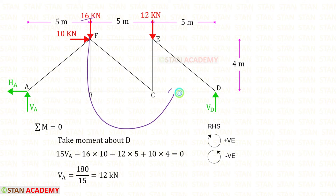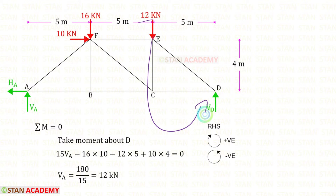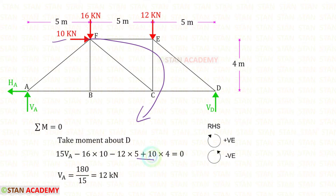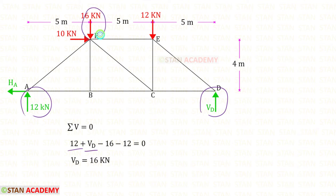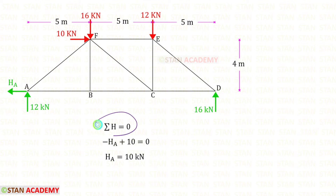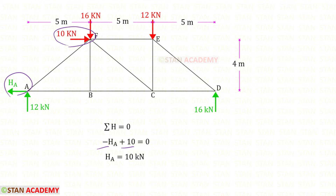This load is acting in the anticlockwise direction, so it will be negative and the distance is 10. This load is also acting in the anticlockwise direction, so it is also negative and the distance is 5. This horizontal load is acting in the clockwise direction, so it will be positive and the distance is 4. For VA, we will get 12 kN. Using this rule, we can find VD. VA and VD are acting upwards, so both are positive. These two loads are acting downwards, so both are negative. For VD, we will get 16 kN. HA is acting towards the left side so it will be negative. This load is acting towards the right side so it will be positive. For HA, we will get 10 kN.